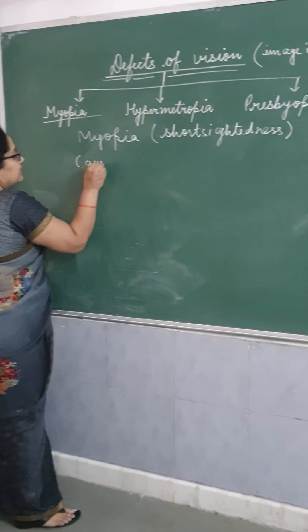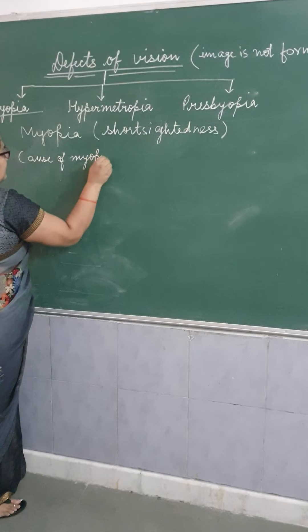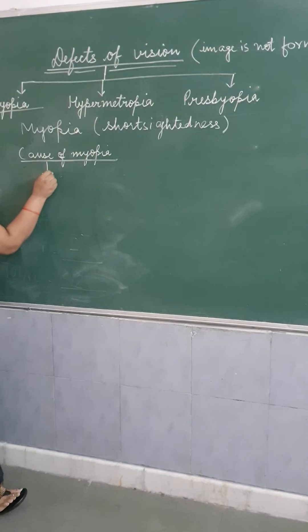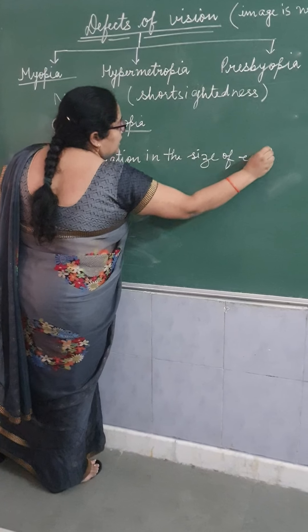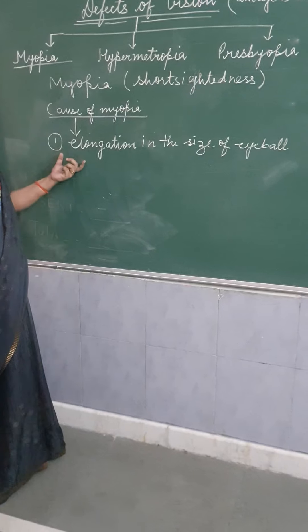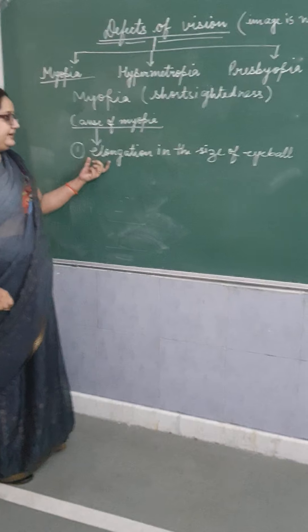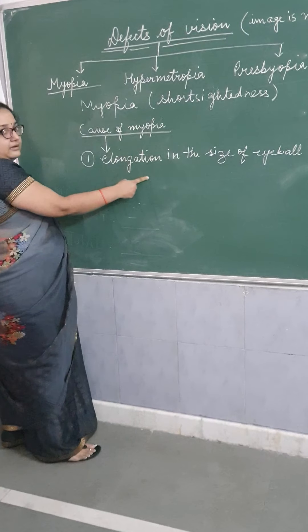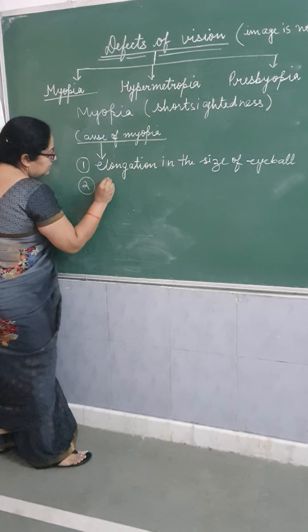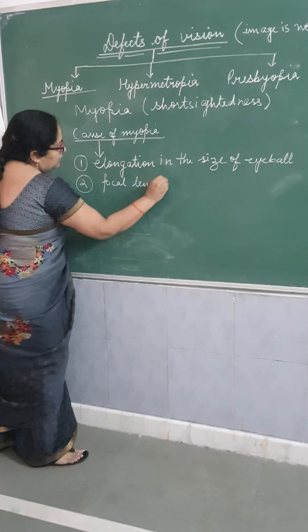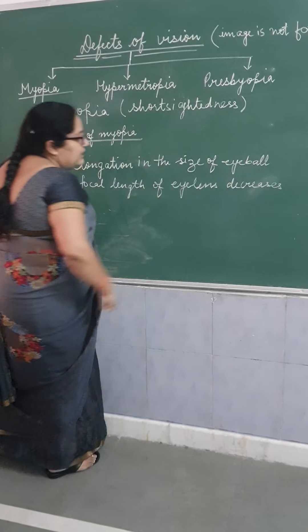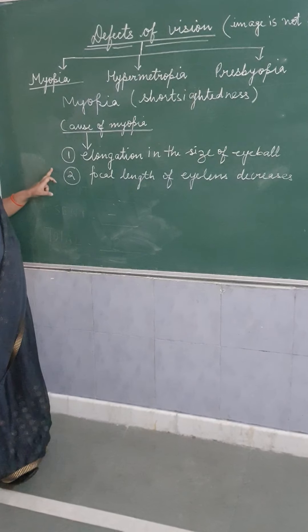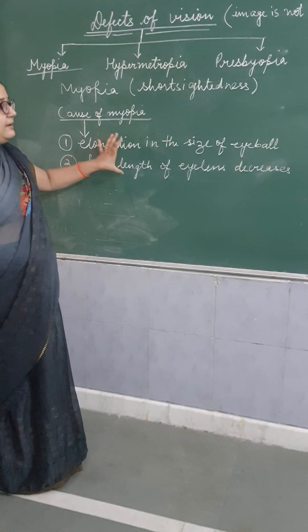Now, what is the cause of myopia? There are basically two causes. The first cause is elongation in the size of the eyeball. If the size of the eyeball increases, the image will not form on the retina and myopia will occur. The second cause is that the focal length of the eye lens decreases, or the eye lens becomes thick.